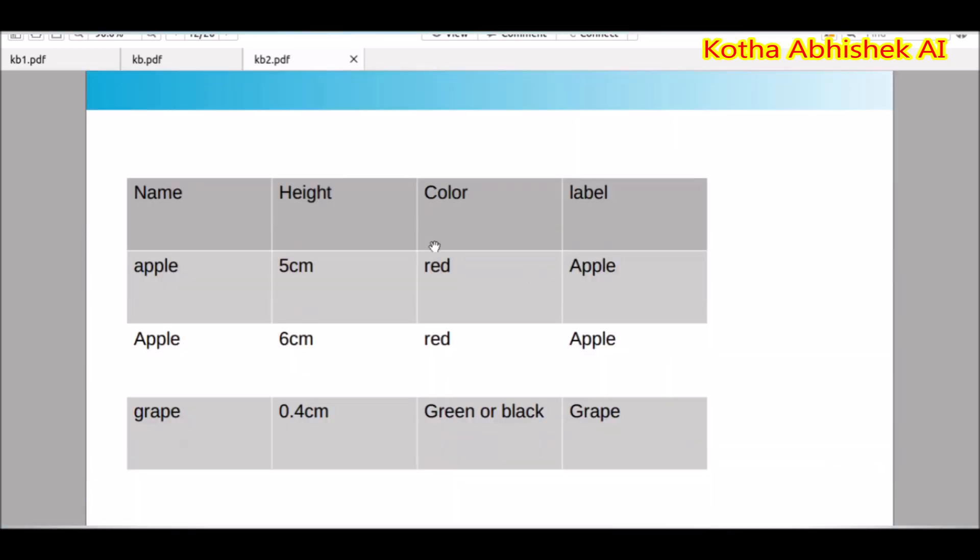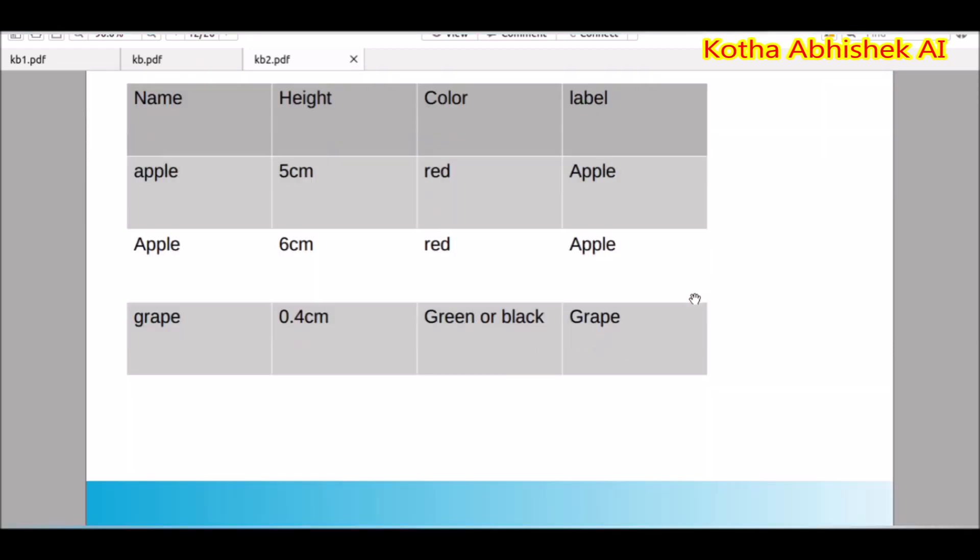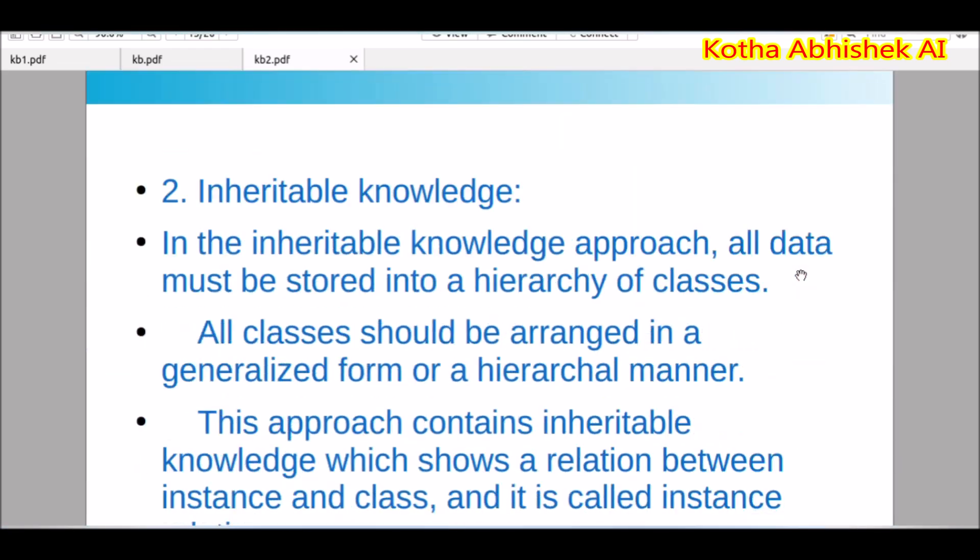But there is very little chance for inference. Inference means that we have to derive something. If we have 5 cm and 6 cm, and we query for 5.5 cm, there is less chance. There is very little opportunity. This is not that much effective.